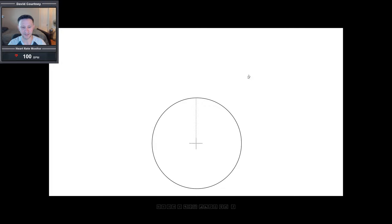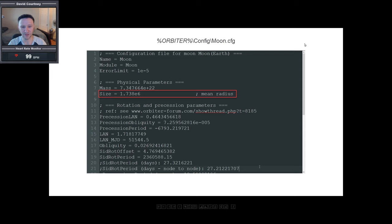So what we're looking at here is, imagine this is the moon. And in the dead center of the moon, we have this crosshair. So one of the first things I want to know is, well, what is the distance between the center of the moon and the surface of the moon? Well we can get that information by going to our orbiter directory, going into the config directory and then inside of there, there's a file called moon.cfg. On line eight of that file, there's a line that says size equals 1.738E6. And that is the mean radius and this is going to be the most accurate way to find the radius on the moon.